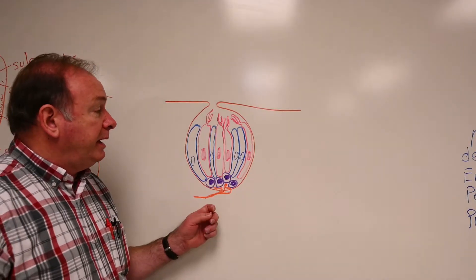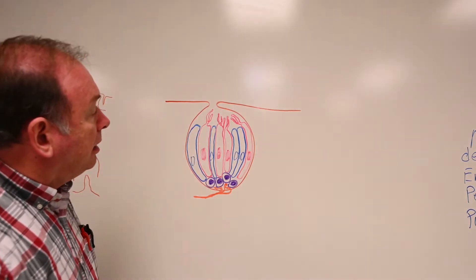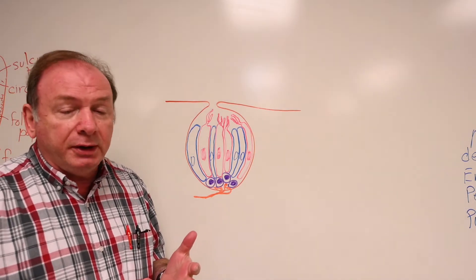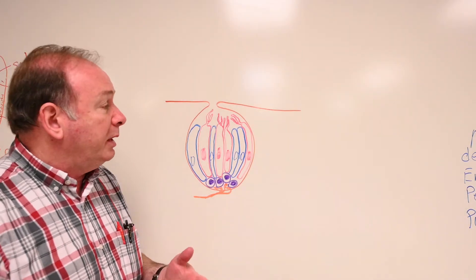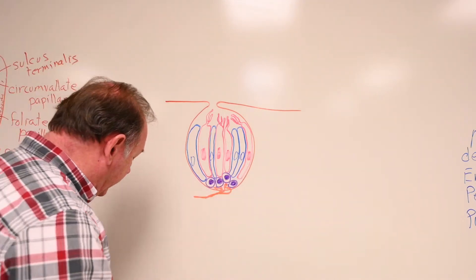Here we've made a drawing of a taste bud on the tongue. On your circumvallate papillae, on your foliate papillae, and on your fungiform papillae, you'll find taste buds.